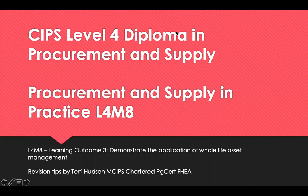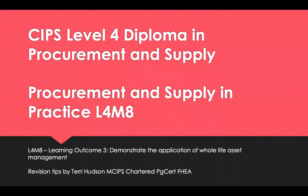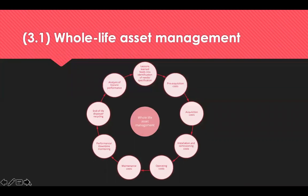Hello and welcome to revision tips for CIPS Level 4 Diploma in Procurement and Supply. This is Module 8: Procurement and Supply in Practice, Learning Outcome 3, which is to demonstrate the application of whole life asset management. Whole life asset management is also known as whole life cost management, and it relates to fixed assets. It aims to obtain the best value through the lifetime of the asset. It's the process of evaluating the total price and all other costs associated with the item so an informed decision